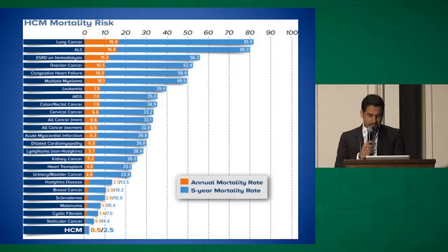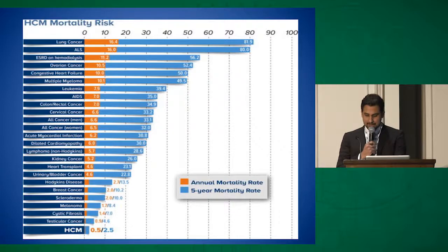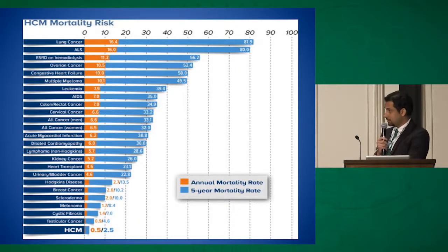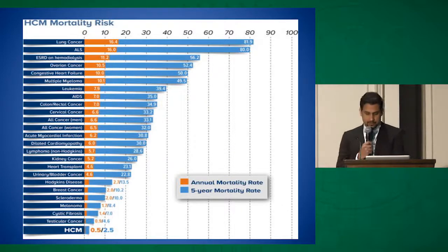If we manage these patients aggressively using ICDs in select populations, alcohol ablation, and transplant, they can have a normal lifespan. This shows hypertrophic cardiomyopathy event rate and mortality at 0.5%, comparable to the general population.